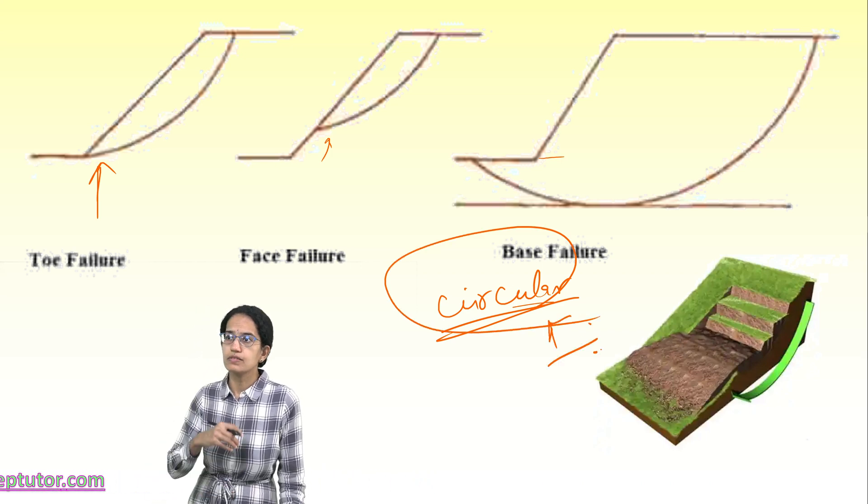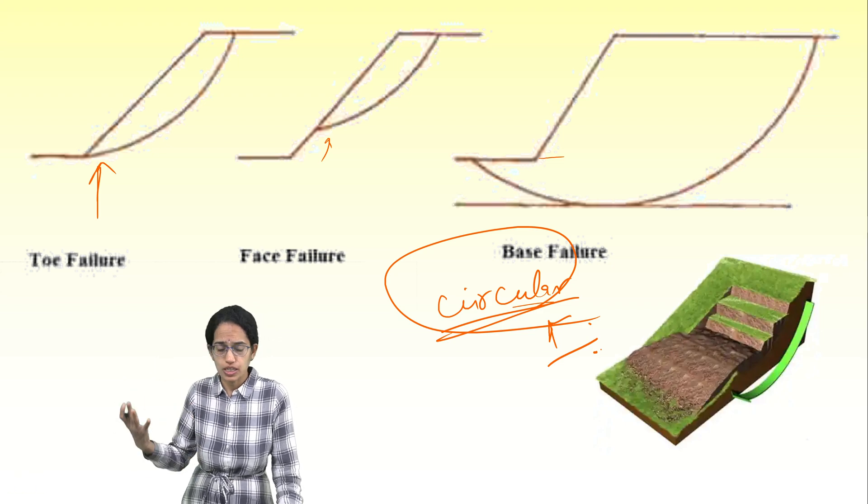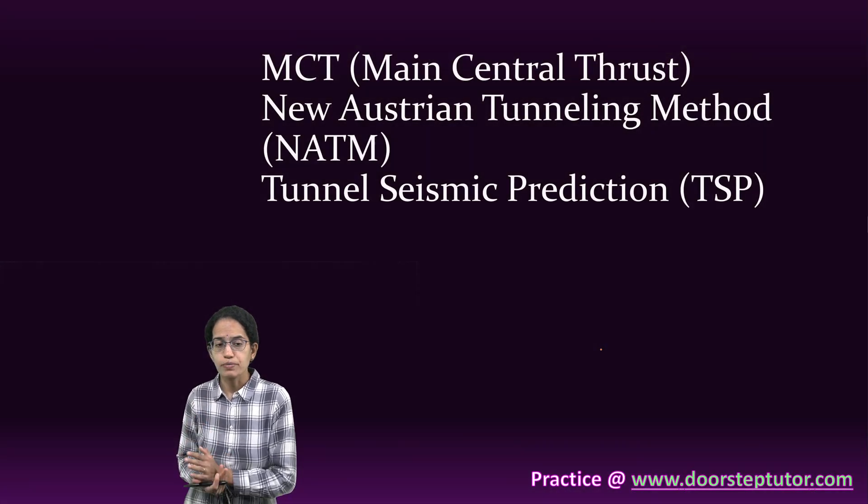Rotational failures can be seen where you have infinite slopes in the case of dams or embankments.